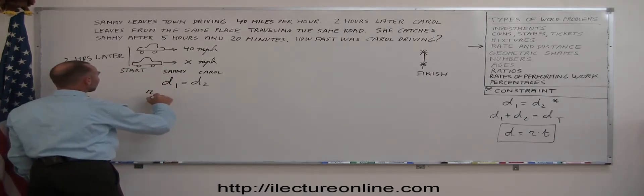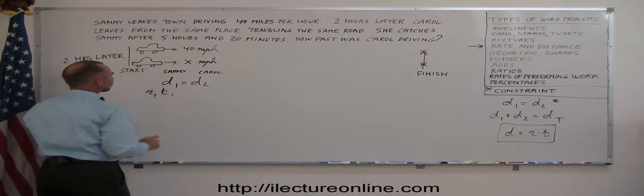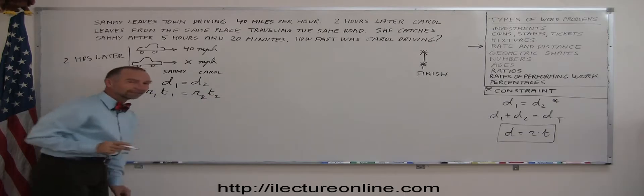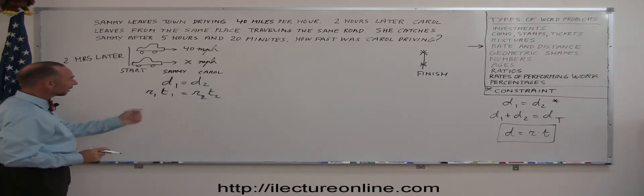That means the rate of Sammy times the time that Sammy travels that distance equals the rate of Carol times the time that Carol travels that distance. Now we can plug in what we know.